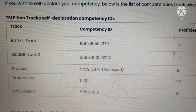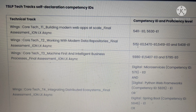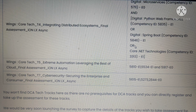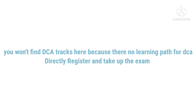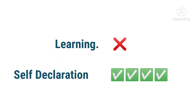There is a list for self declaration. First, I will tell you the non-tech track IDs — this is the list of non-tech track IDs. Next, the tech track IDs — this is the list for tech tracks. You won't find DCA tech tracks here because there is no prerequisite for DCA tracks. You can directly register and take up the assessment for those tracks.